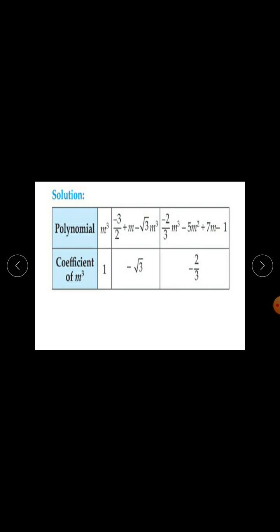For the first polynomial m cubed, the coefficient of m cubed is 1. For the second polynomial, the coefficient of m cubed is minus root 3. For the third polynomial, minus 2 upon 3 times m cubed minus 5m squared plus 7m minus 1, the coefficient of m cubed is minus 2 upon 3.